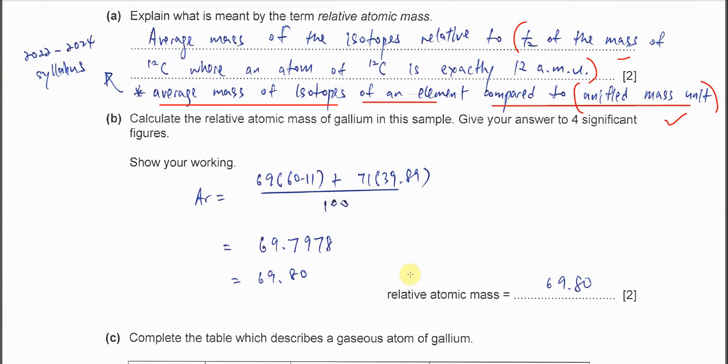Part B. Calculate the relative atomic mass of gallium. So you just need to use the mass: 69 times 60.11 plus 71 times 39.89, over the total relative abundance which is 100 in this question. And it asks for 4 significant figures, so you need to give 69.80. This is the requirement, you must give to 4 significant figures.